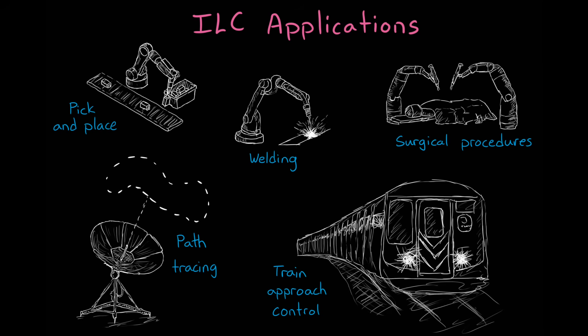For example, manufacturing robots often work in environments like this, like the pick-and-place arm or one that has to weld the same parts in the same place each time. Or ILC could be used for pointing an antenna that has to trace the same path through the sky. Or for medical robots that have to do predefined surgical procedures. Or for accelerating and decelerating subway trains to ensure smooth operation. Pretty much any repetitive task with low variation between iterations are good candidates for ILC.